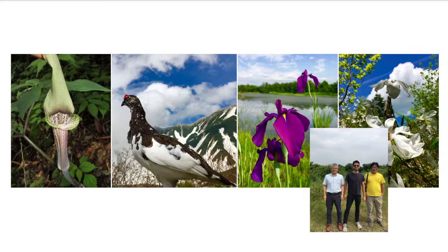These are the wonderful things we saw in Japan. There is an Aracema — it's like your Amorphophallus, only much, much smaller. And then in the middle was a rock ptarmigan — look at its beautiful camouflage. It changes with the seasons: in winter it's pure white, and in summer when we went it's mottled brown and white. And these are my friends Godo-san and Ohara-san, who shared their flora with me.